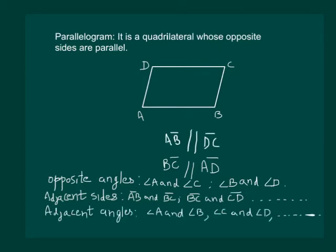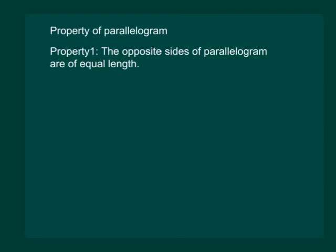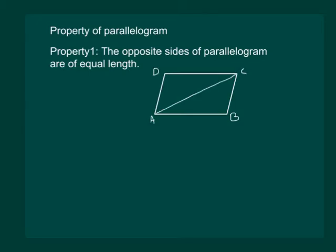Now we shall move to the properties of parallelogram. The first property states that the opposite sides of a parallelogram are of equal length. To prove this, let us take a parallelogram ABCD and draw its diagonal AC.